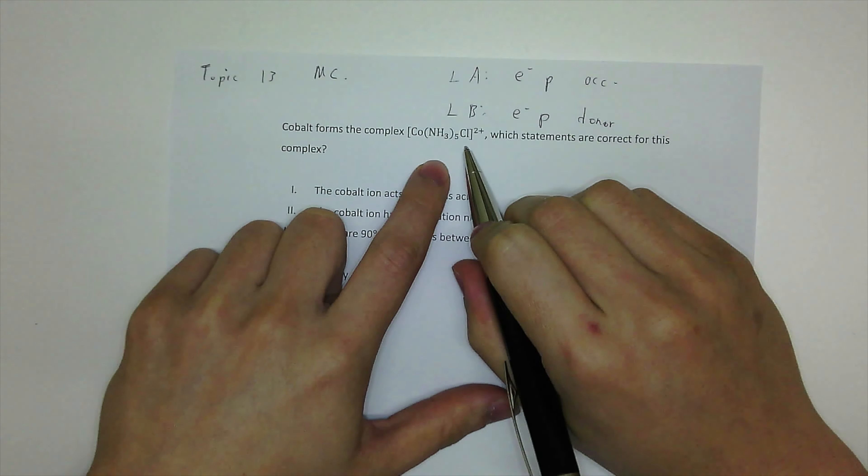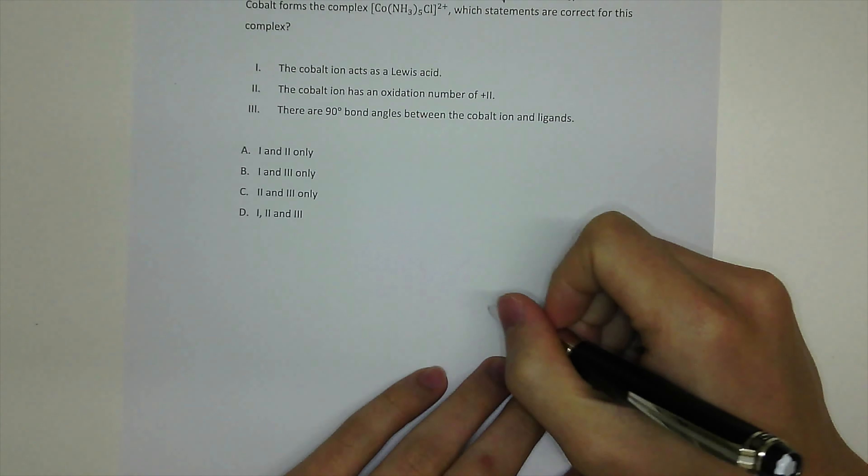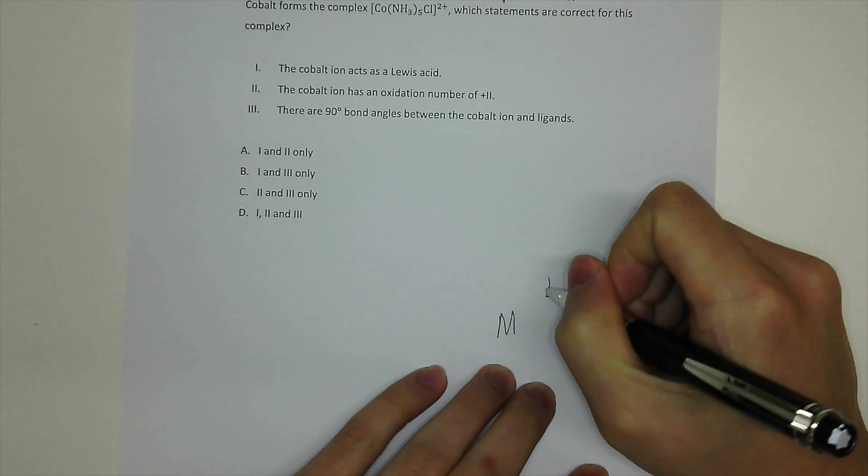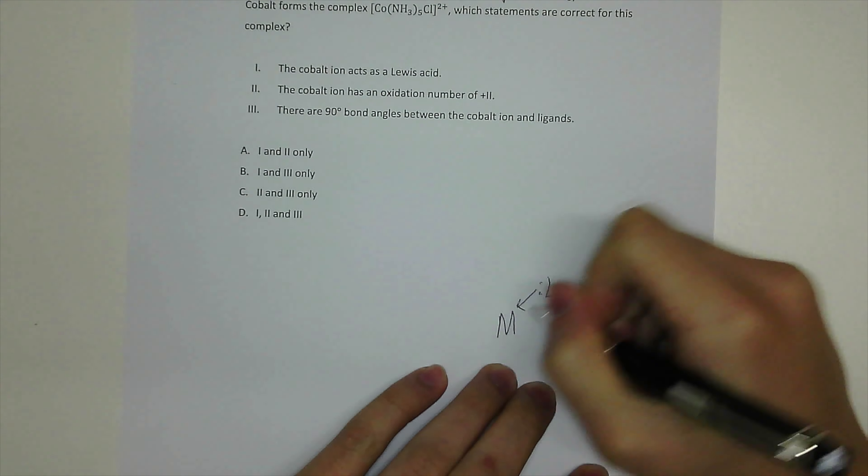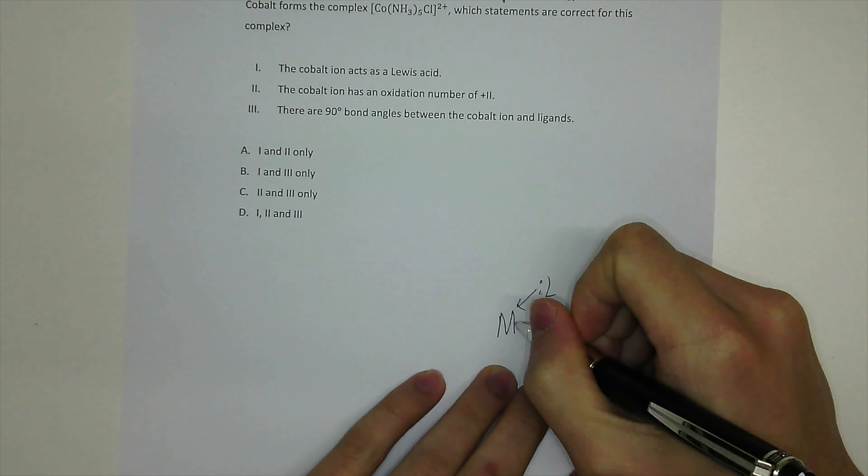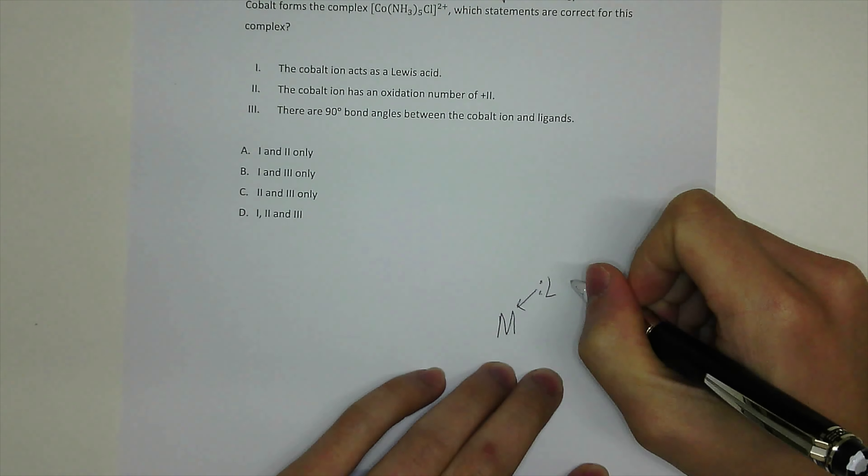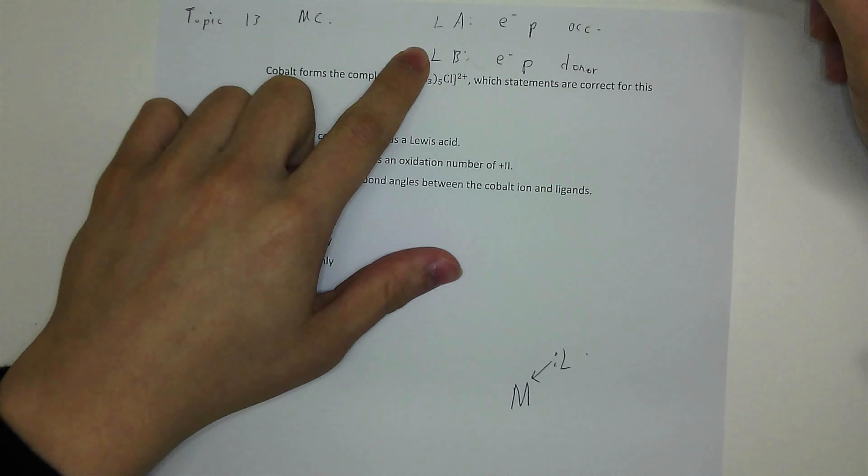While Lewis base is electron pair donor. So what's metal ion and ligand? Complex ion is formed when the ligand donates a lone pair electron to the metal ion.